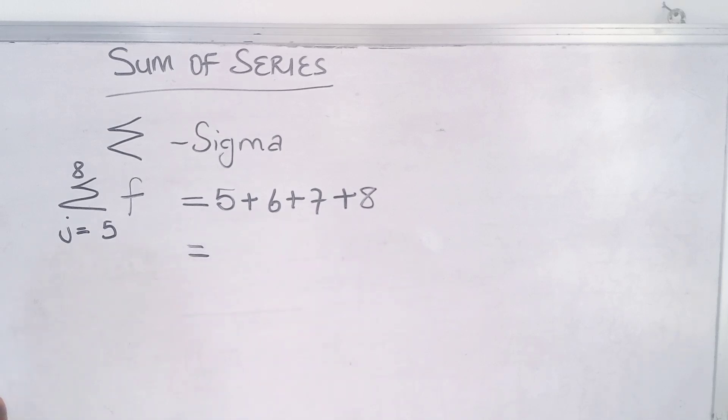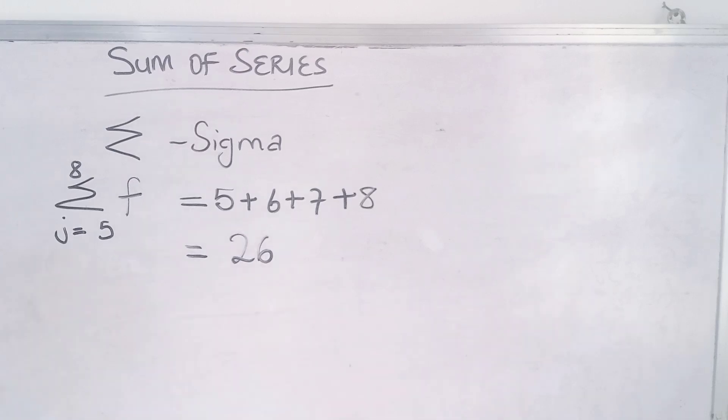When you sum this up, you're able to get 26. So 5 plus 6 is 11, 11 plus 7 is 18, 18 plus 8 is 26. Now let's solve another example.